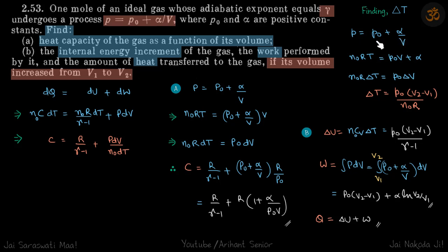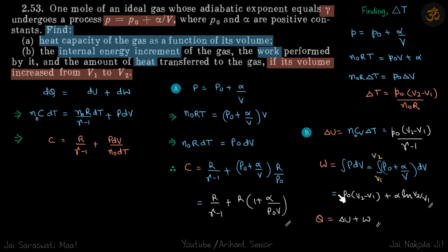From the given equation, we eliminate p and find that n₀R·ΔT = p₀·ΔV, so ΔT = p₀·ΔV/(n₀R), where ΔV = V2 − V1. Substituting that gives the change in internal energy. Work done is the integral of p·dV from V1 to V2, which gives the work done by the gas.